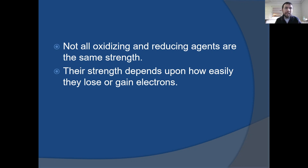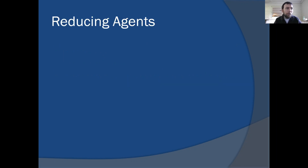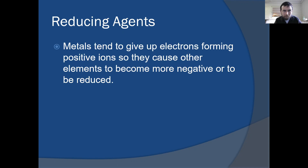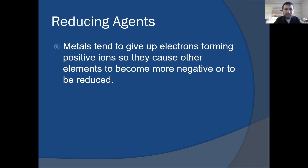Their strength, in terms of oxidizing and reducing agents, is going to depend on how easily they gain or lose electrons. For our reducing agents, they tend to be metals because metals tend to give up electrons. A reducing agent is something that is being oxidized. Our metals tend to form positive ions very readily, so metals give up electrons forming positive ions, causing other elements to become more negative or to be reduced.